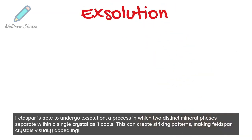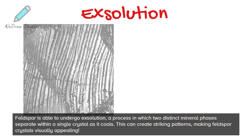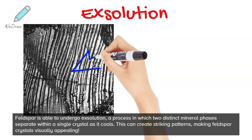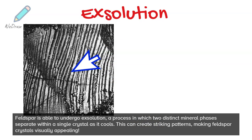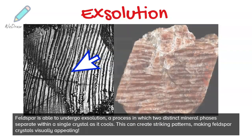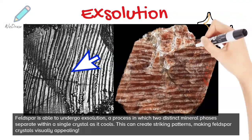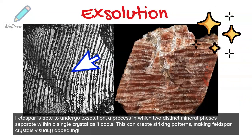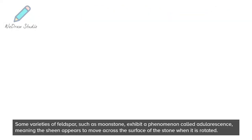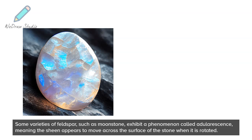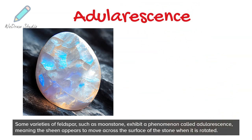Feldspar is able to undergo exsolution, a process in which two distinct mineral phases separate within a single crystal as it cools. This can create striking patterns, making feldspar crystals visually appealing. Some varieties of feldspar, such as moonstone, exhibit a phenomenon called adularescence.